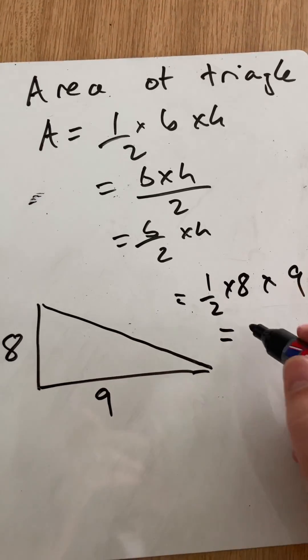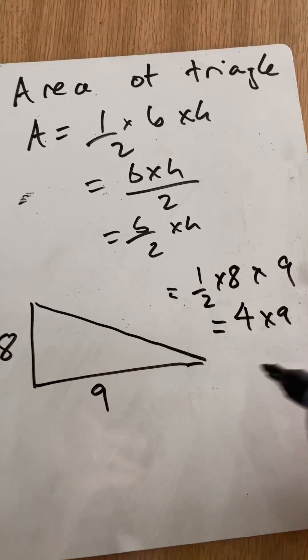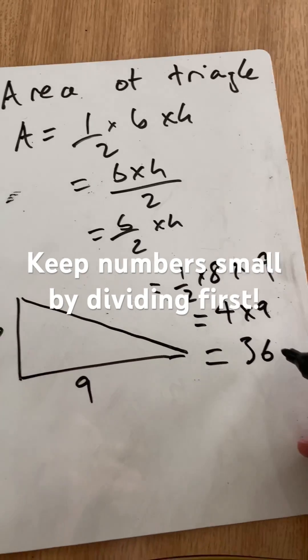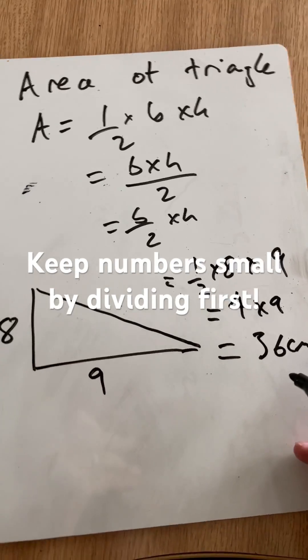Half of 8, or 8 divided by 2, is 4. 4 times 9, know your timetable, is 36. So the unit is centimeters squared.